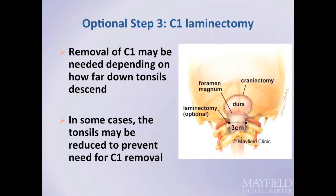Removal of the C1 ring, the arch of the first spinal vertebra, may be required in some patients to reestablish appropriate flow at the foramen magnum. Some surgeons recommend preserving the C1 ring; as an alternative, the tonsils may be coagulated or shrunk. In either case, fluid must be restored at the cranioservical junction. In most patients, removal of the C1 ring is not associated with any long-term problems or functional restrictions, though in rare cases it may render the ring prone to fracture.